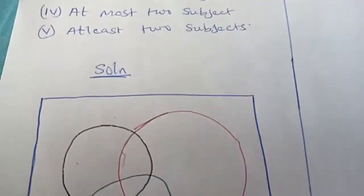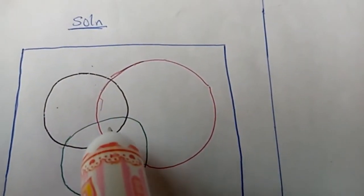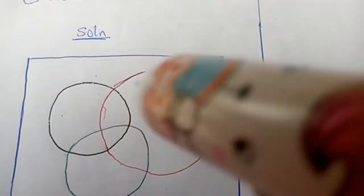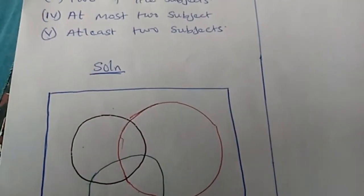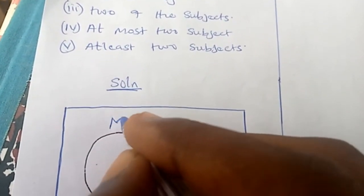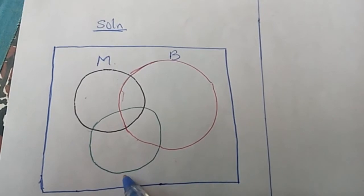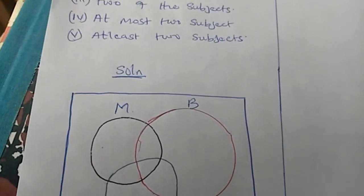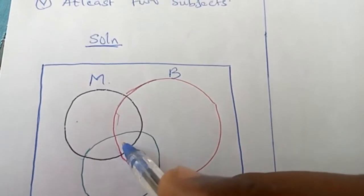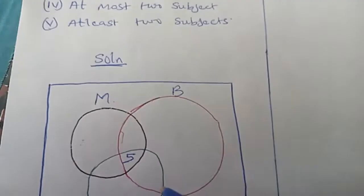Now let's look at our Venn diagram. Whenever you are doing a three-set Venn diagram, the center intersection is always the first place you insert your value — that is, the ones who offered all three subjects. The black circle stands for mathematics, the red circle stands for biology, and the green circle stands for physics. The first thing you insert is the center: how many offered all three subjects? That is 5, so you put 5 there first.